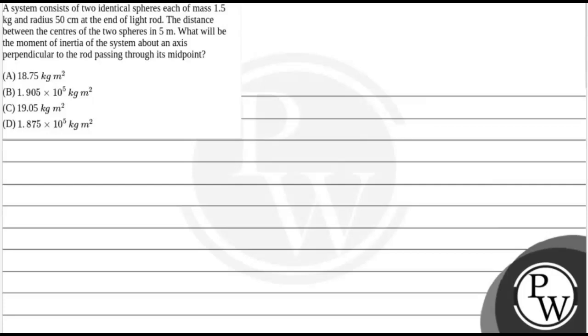Hello Bukju, let's read the question. The question says a system consists of two identical spheres, each of mass 1.5 kg and radius 50 cm at the end of a light rod. The distance between the centers of the two spheres is 5 m. What will be the moment of inertia of the system about an axis perpendicular to the rod passing through its midpoint?